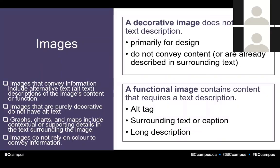When talking about images, we need to make a distinction between decorative images and functional images. Decorative images are primarily used for design and do not convey content, or they convey content already described in the surrounding text — these do not need text descriptions. Functional images convey important non-text content. For functional images, you have to consider what information would be lost if those images weren't available, and this information needs to be provided in text format. There are three ways to provide text descriptions: in the alt text field, in the surrounding text or caption, or by creating and linking to a long description.